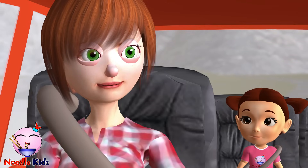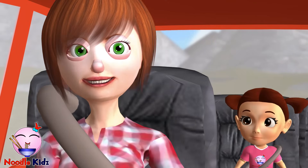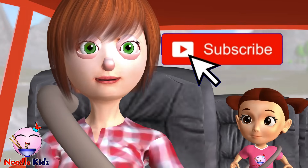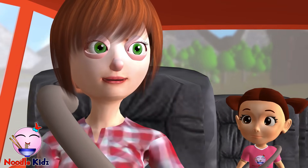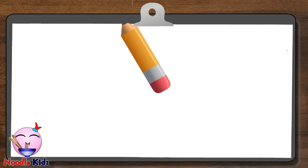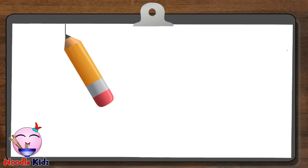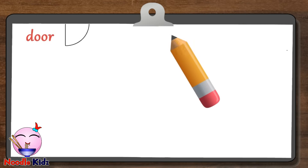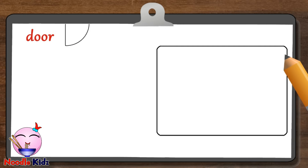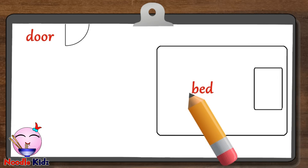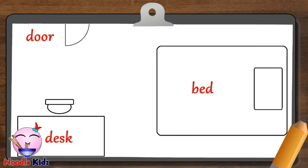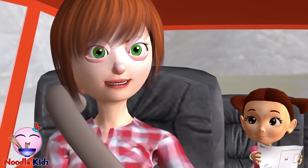Can you teach me how to make a map? Of course. First, why don't you hit the subscribe button so you don't miss our future educational videos. I will teach you how to make a map of your room. First, go get a piece of paper and a pencil or a pen. Now, locate where your door is and draw this. Next, let's draw your bed, your desk, and your toy box. Ta-da! That's your first map.